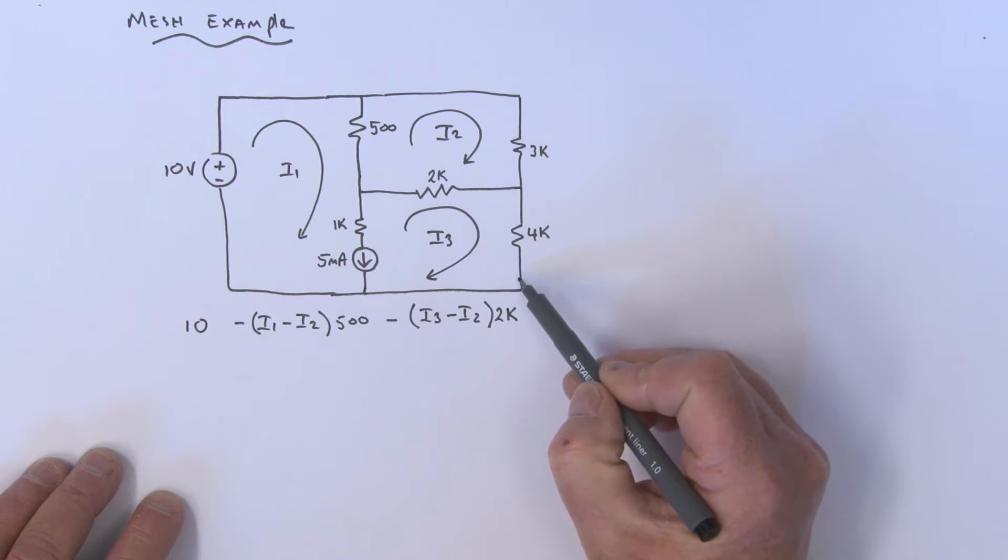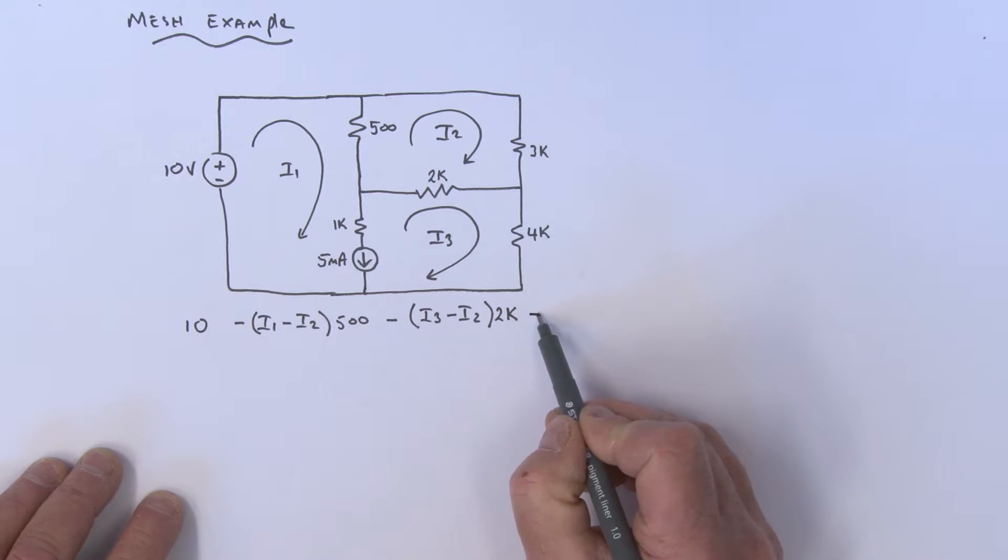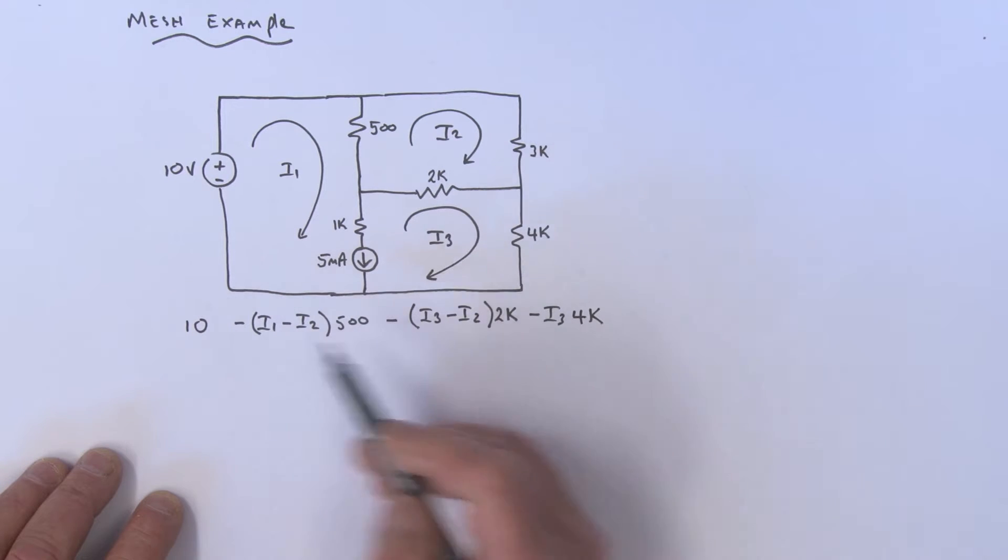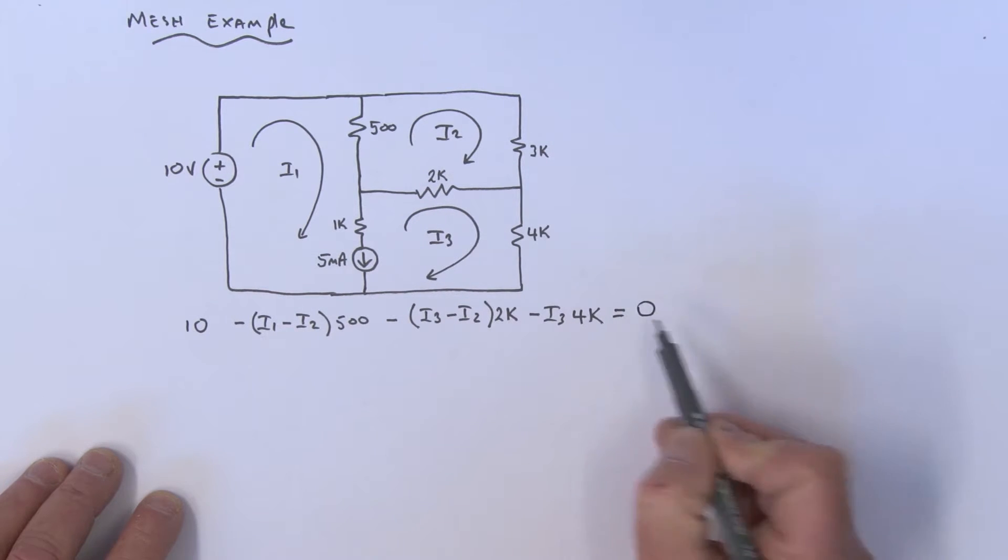Then we've got the 4k resistor, so it's minus I3 times 4k. We're back at the beginning, so all of that equals zero. That's one mesh current equation.